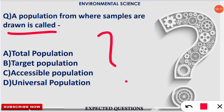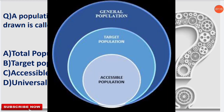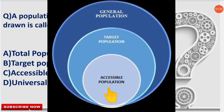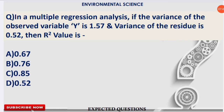The next question: a population from where samples are drawn is called what? The correct option is option C — accessible population. Accessible population is also known as study population. It is the population in research to which researchers can apply their conclusions. As shown in the picture: the general population is the total (complete circle), inside that resides the target population, and a part of the target population — from where samples are drawn — is the accessible population.